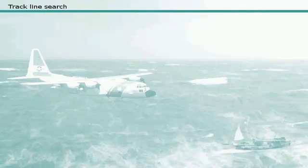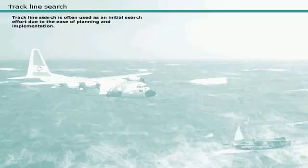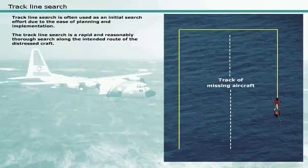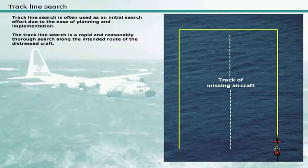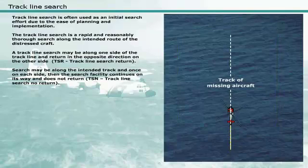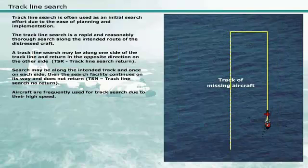Track line search is normally used when an aircraft or vessel has disappeared without a trace along a known route. It is often used as an initial search effort due to the ease of planning and implementation. The track line search is a rapid and reasonably thorough search along the intended route of the distressed craft. The search may be along one side of the track line returning on the other side, or along the intended track and once on each side, after which the search facility continues on its way and does not return. Aircraft are frequently used for track search due to their high speed.